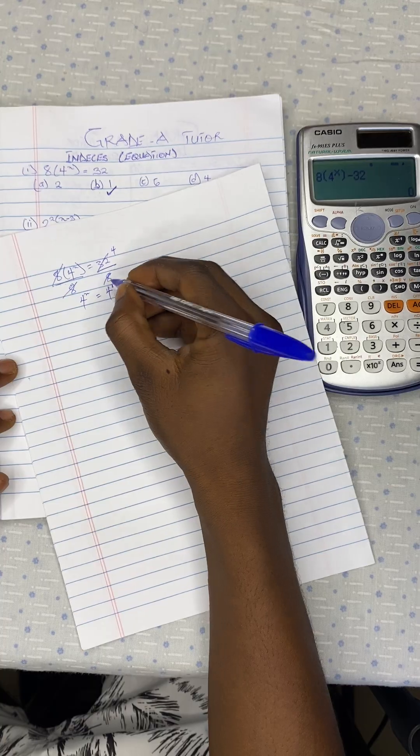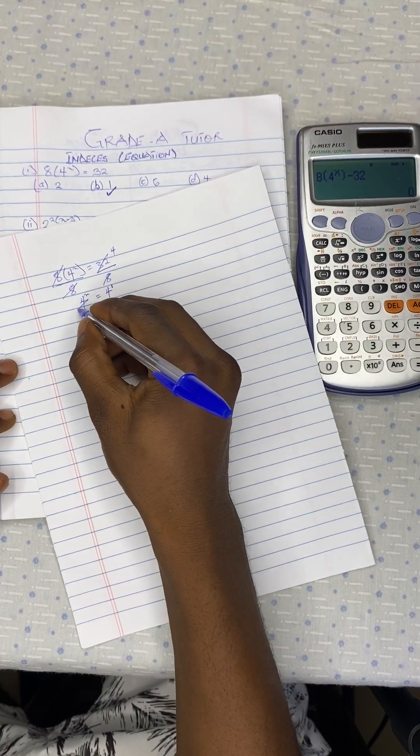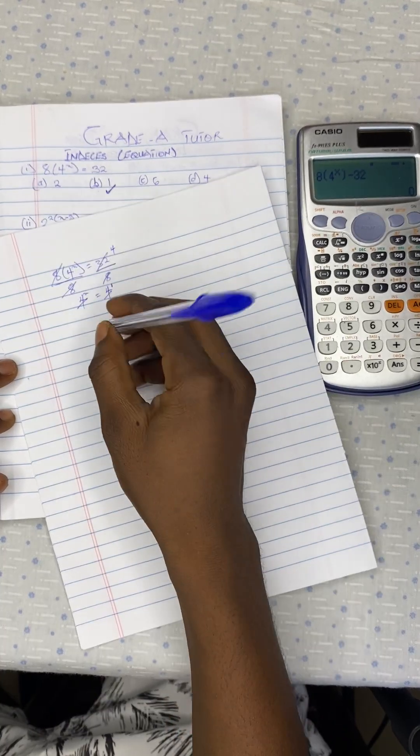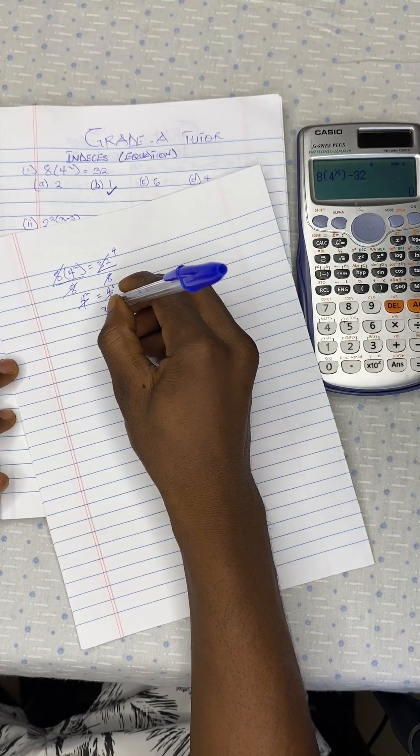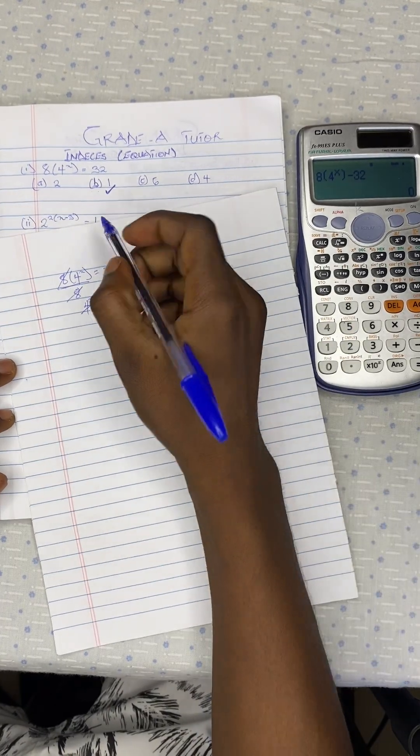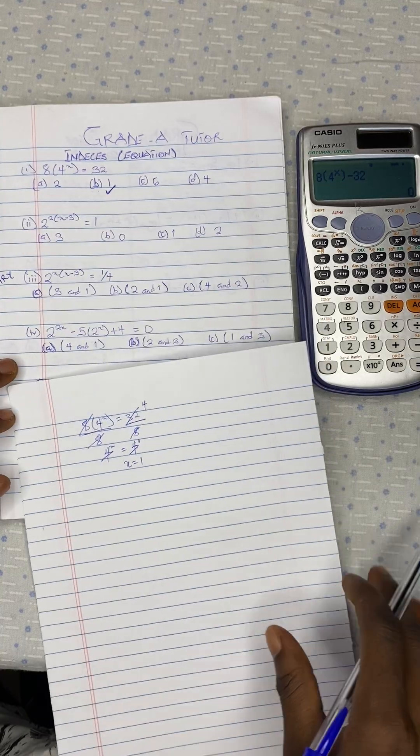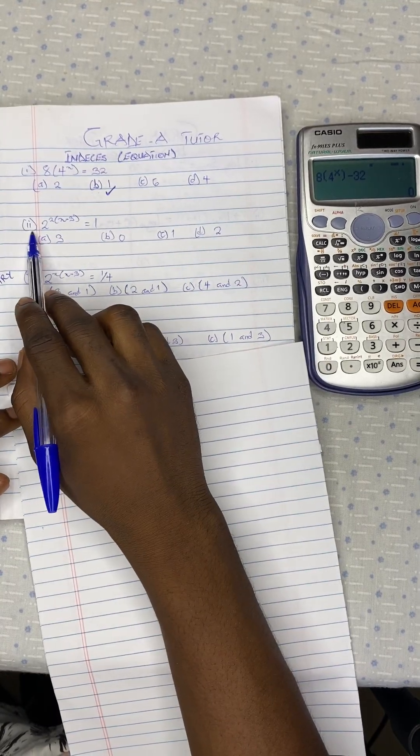So since the bases are the same, there is exponent 1 here. So we cancel the bases. Then we take the exponent. So x is equal to 1. So that is why you are getting this.